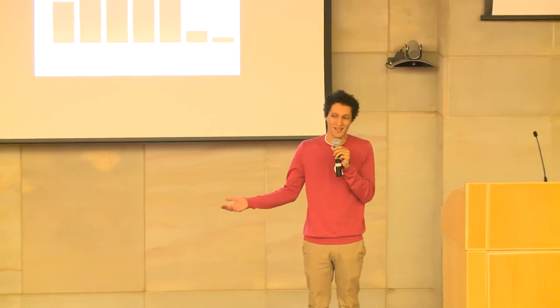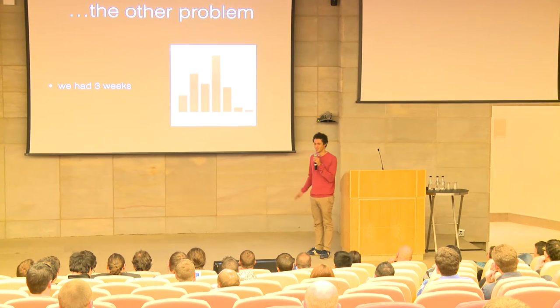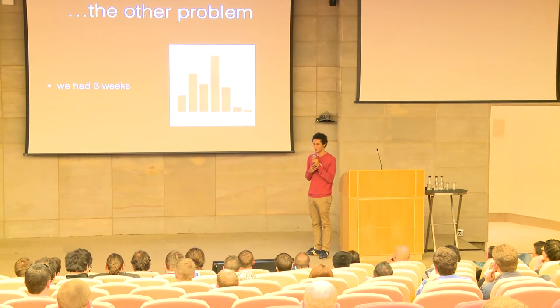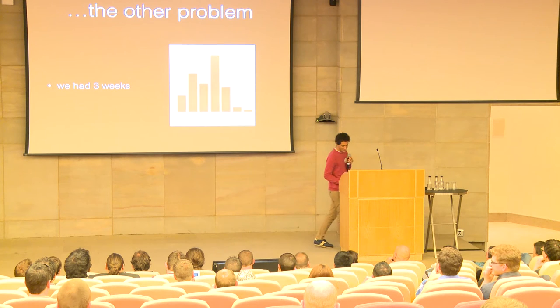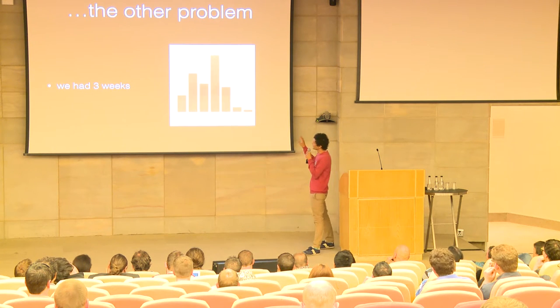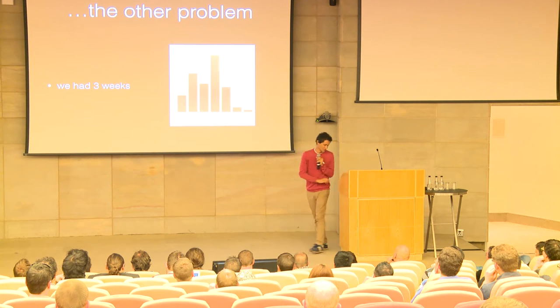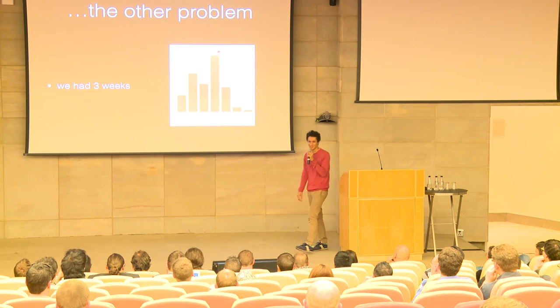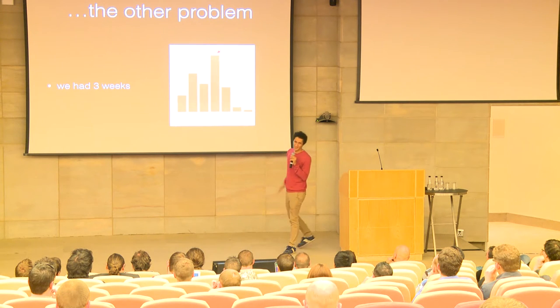That was the main problem for the software. The other problem was that we had three weeks to build this whole system. Three weeks — for something where you want to be sure, and when it's going to affect the people deciding the constitution of a country, three weeks is a very short amount of time. This is a chart showing the number of commits per week on the project. The election was about halfway through that final week, and we're very glad that arrow is on that bar and not any of the previous ones.